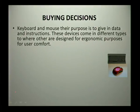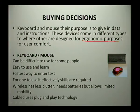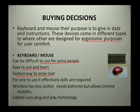Now let's look at some buying decisions regarding a keyboard and a mouse. Your keyboard and mouse allow you to enter data as well as instructions. These devices come in different types, some designed for ergonomic purposes for user comfort. They can sometimes be difficult to use for some people, but are easy to use and learn. They are also the fastest way of entering text, though you will need some skills to use them effectively.